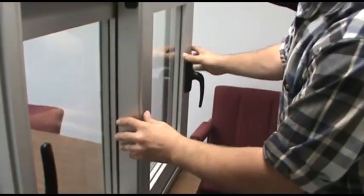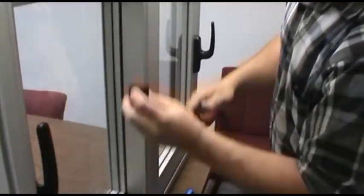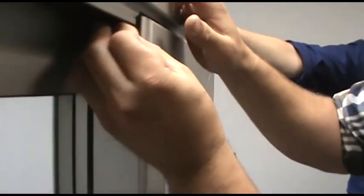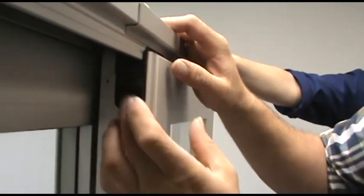Then you just shut your sash and do everything in reverse procedure. Install your foam block, your foam plug.